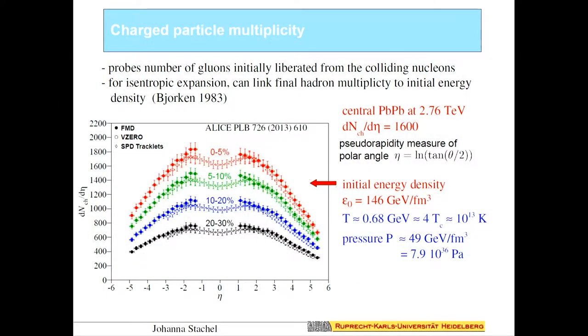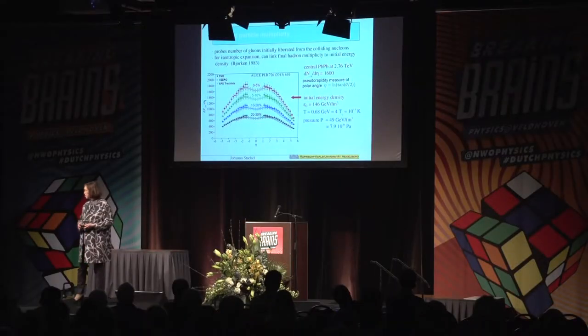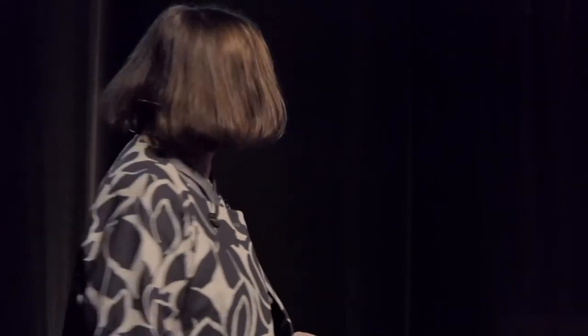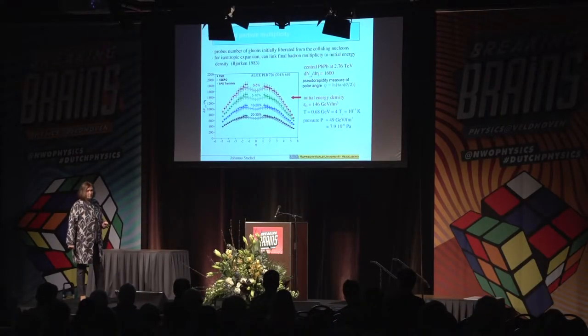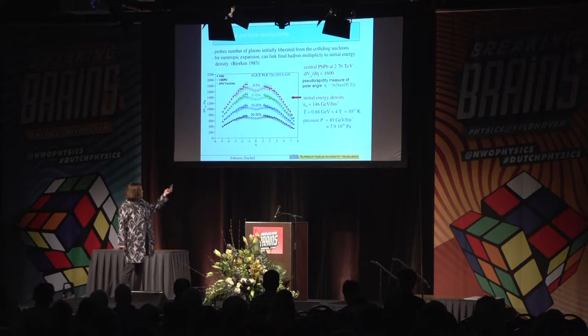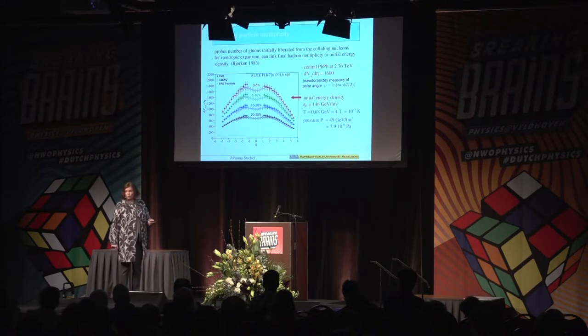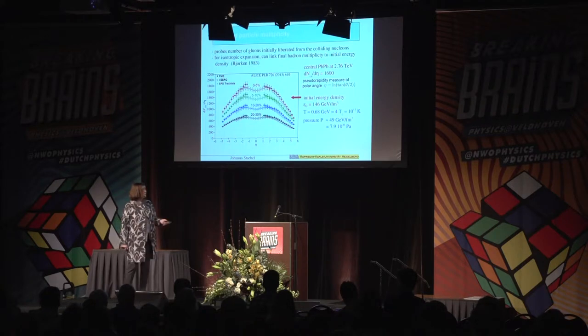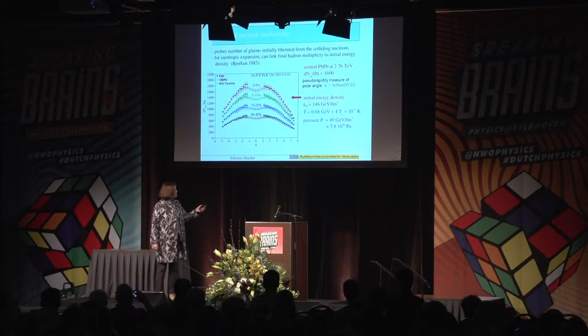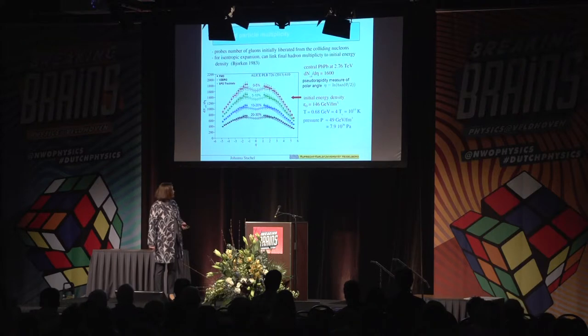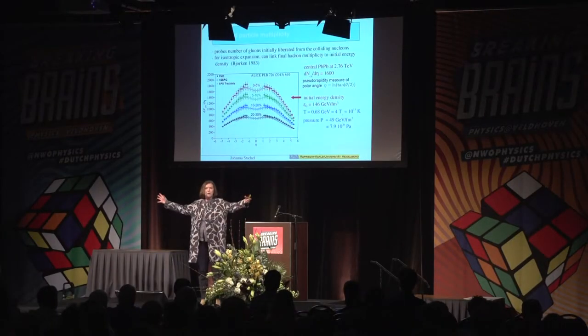If the expansion from the initial hot phase to the end is isentropic, we can take the final multiplicity and convert it back to an initial energy density — a recipe given by Björken already in 1983. This multiplicity density of 1,600 translates to an initial energy density of about 140 GeV per cubic femtometer — far beyond the critical energy density of 1 GeV per cubic femtometer needed to make quark-gluon plasma. The temperature corresponds to about four times the critical temperature, with a pressure of 8×10³⁶ Pascal, driving the system apart very rapidly.